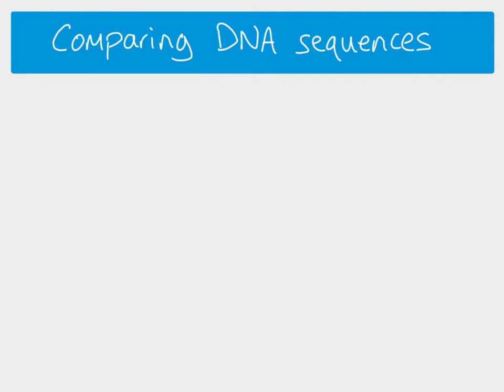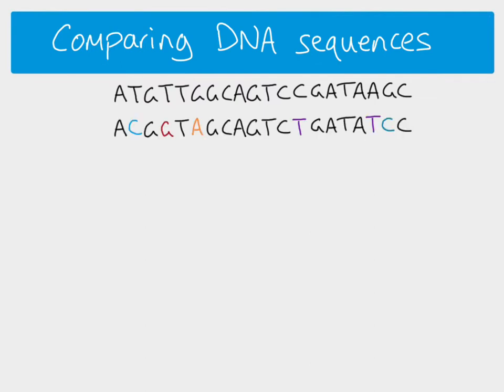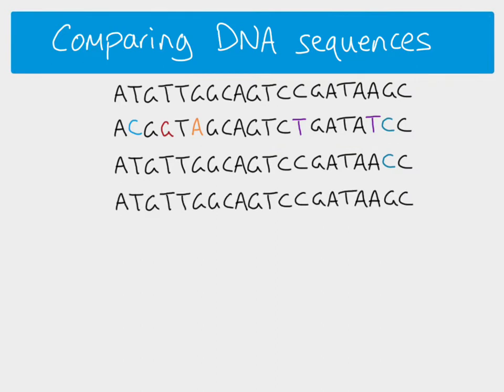Now let's look at some slightly more complicated DNA sequences and see how we can use similarities to work out evolutionary relationships. Here's a starting sequence, and we can compare it with several other sequences from different species. We can see that these are all very similar — the differences have been highlighted in different colours.